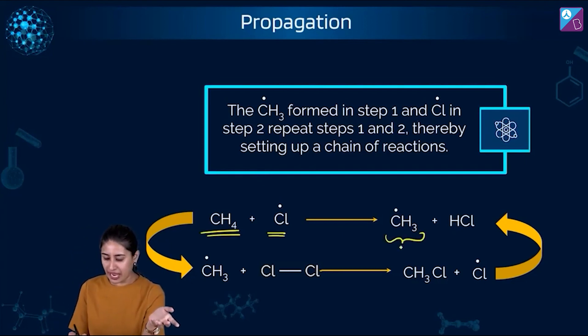Now please understand that this methyl free radical formed in step 1 and chlorine free radical in step 2 repeat step 1 and 2 thereby setting up a chain of reactions. So CH4, Cl, CH4, Cl, methyl free radical, HCl, this methyl free radical, more chlorine, CH3Cl, again Cl free radical.